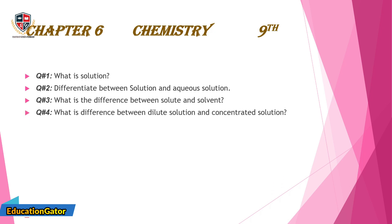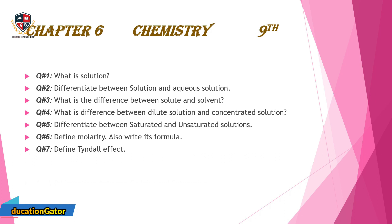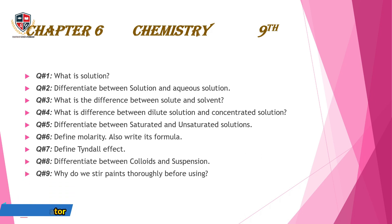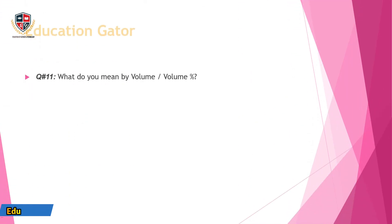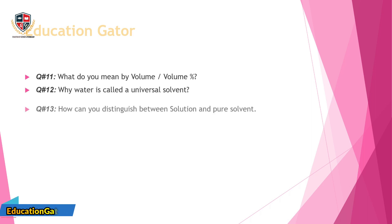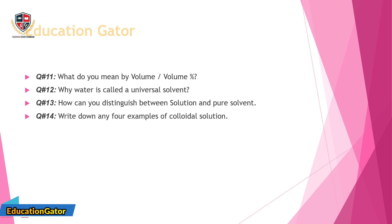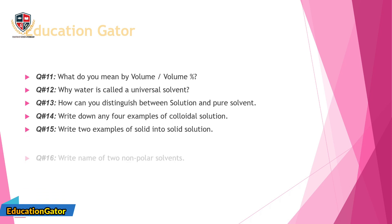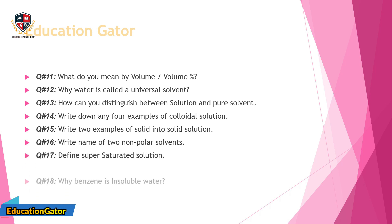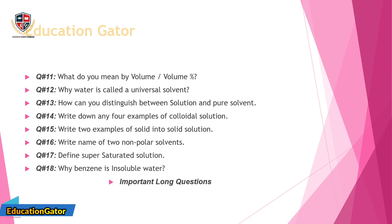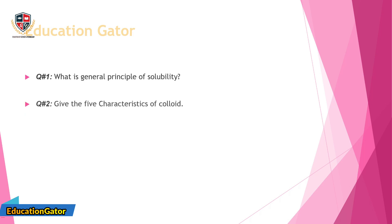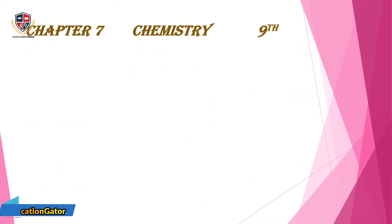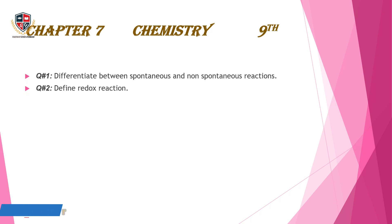Chapter 6, Chemistry 9th. Question 1: What is a solution? Question 2: Differentiate between solution and aqueous solution. Question 3: What is the difference between solute and solvent? Question 4: What is the difference between dilute solution and concentrated solution? Question 5: Differentiate between saturated and unsaturated solutions. Question 6: Define molarity and also write its formula. Question 7: Define Tyndall effect. Question 8: Differentiate between colloids and suspension. Question 9: Why do we stir paints thoroughly before using? Question 10: What do you mean by 'like dissolves like'? Explain with an example. Question 11: What do you mean by volume/volume percent?